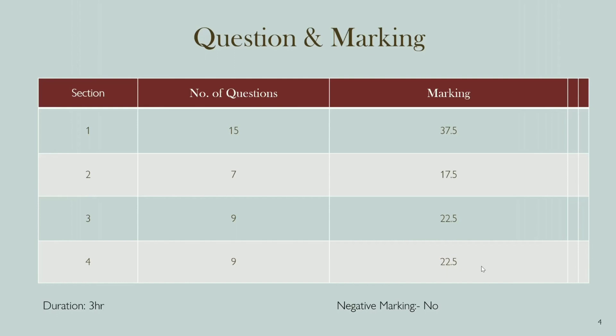Sections 3 and 4 each have 9 questions, with each question carrying 2.5 marks, for a total of 22.5 marks per section. It's important to note that all questions are compulsory and there is no negative marking for incorrect answers. The exam duration is 3 hours and you must score a minimum of 40% to pass. Understanding the question pattern and marking scheme is essential for exam preparation.